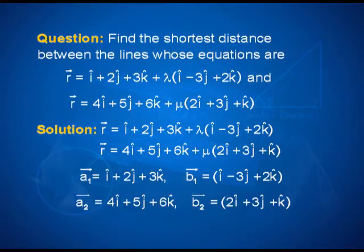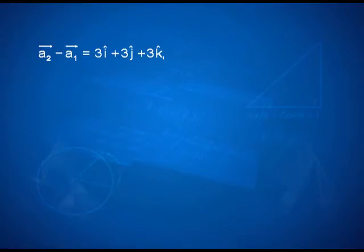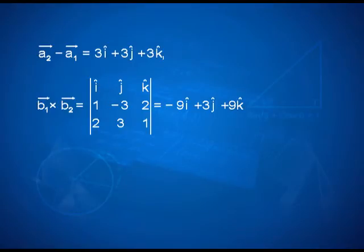Similarly, we identify vector A2 and vector B2. What we need in the formula is B1 cross B2, the vector A2 minus A1, their dot product, and the magnitude of B1 cross B2. It is a very straightforward calculation based on what you learned in the vector chapter. B1 cross B2 is computed as the determinant with i-cap, j-cap, k-cap in the first row, components of B1 in the second row, and components of B2 in the third row. Expand the determinant carefully — an error here can affect the entire calculation.